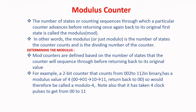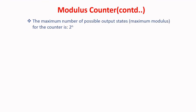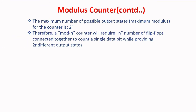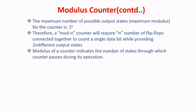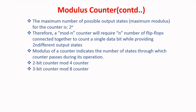Note also that it takes 4 clock pulses to get from 00 to 11. The maximum number of possible output states for the counter is 2 to the power n. Therefore, a mod-n counter will require n flip-flops connected together to count a single data bit while providing 2^n different output states. Modulus of a counter indicates the number of states through which the counter passes during its operation. A 2-bit counter is a mod-4 counter, a 3-bit counter is a mod-8 counter. A mod-n counter is also called a modulo counter.